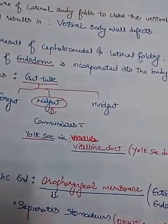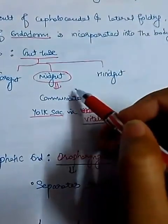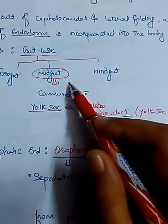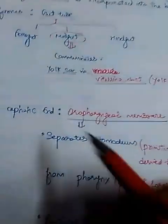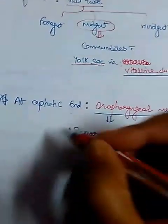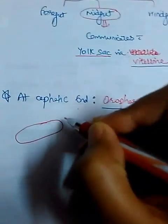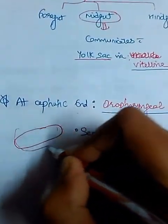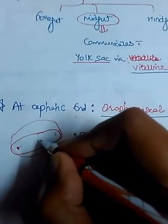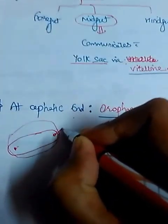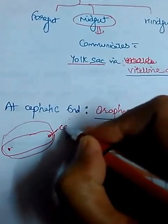The gut tube is derived from endoderm and has three parts: foregut, midgut, and hindgut. The midgut communicates with the yolk sac via the vitelline duct, also called the yolk sac duct. At the cephalic end is the oropharyngeal membrane, and at the caudal end is the cloacal membrane.